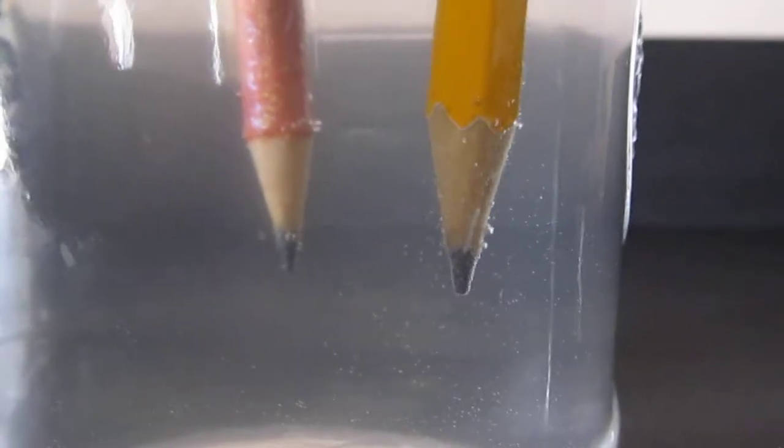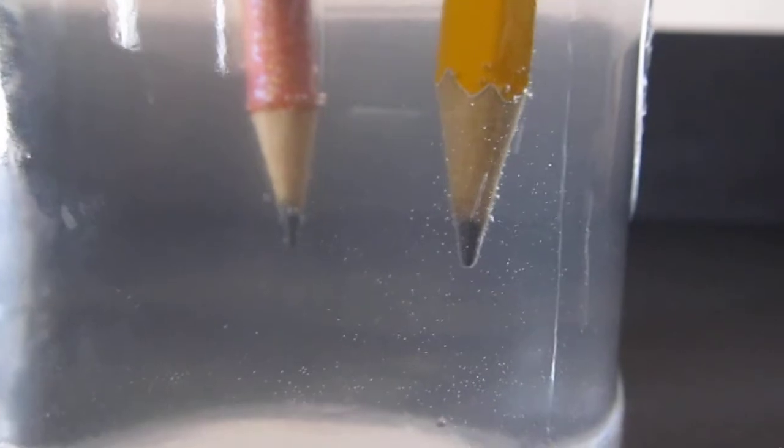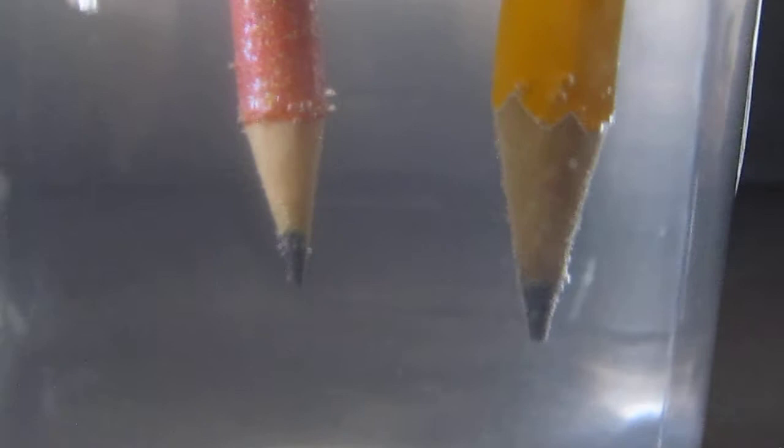As you can see, the yellow pencil is bubbling a lot more than the orange side.